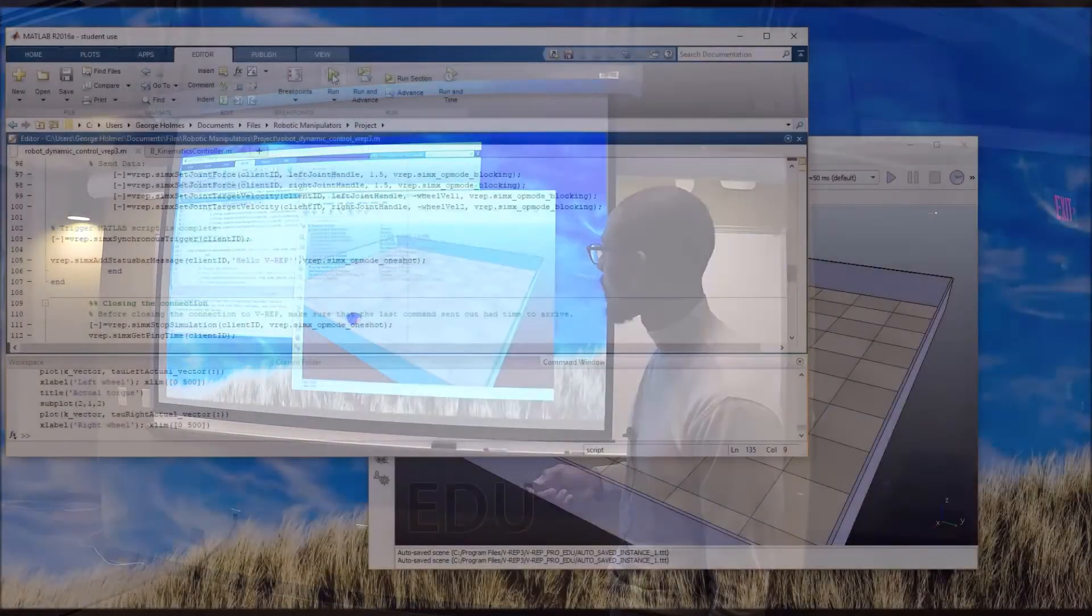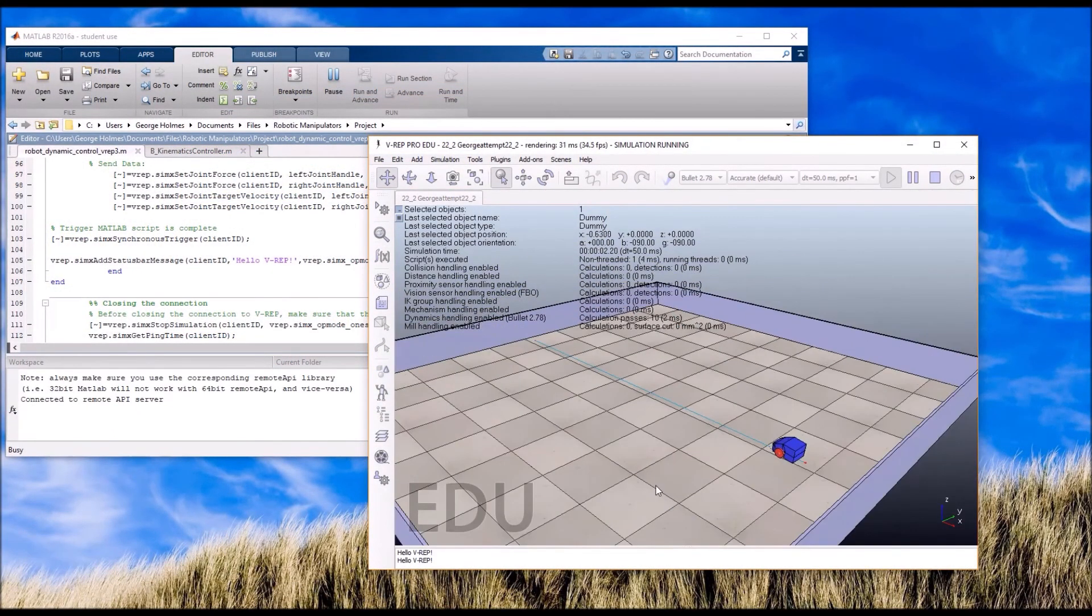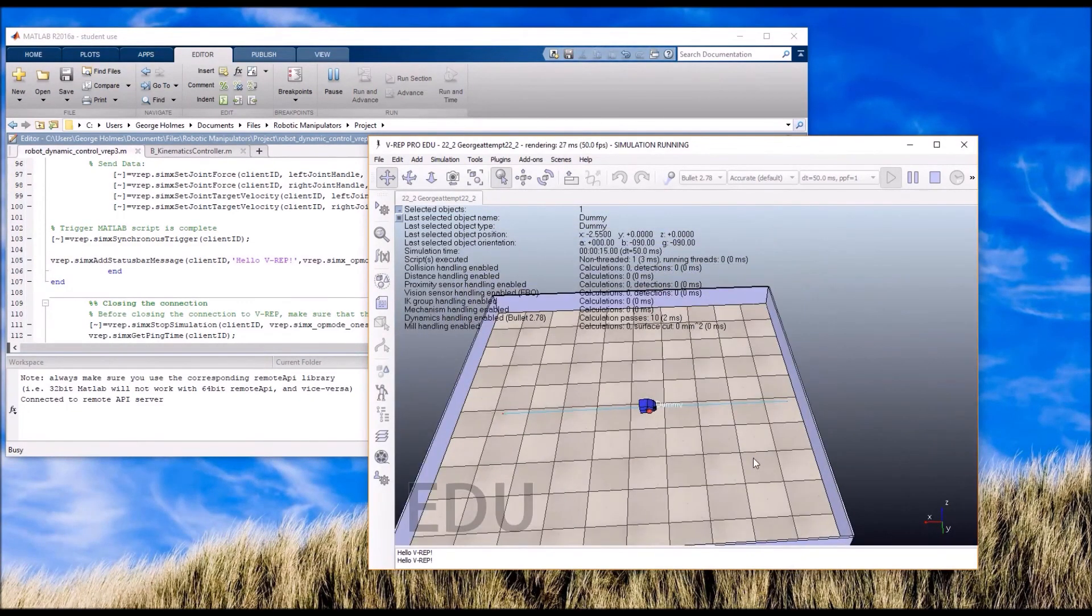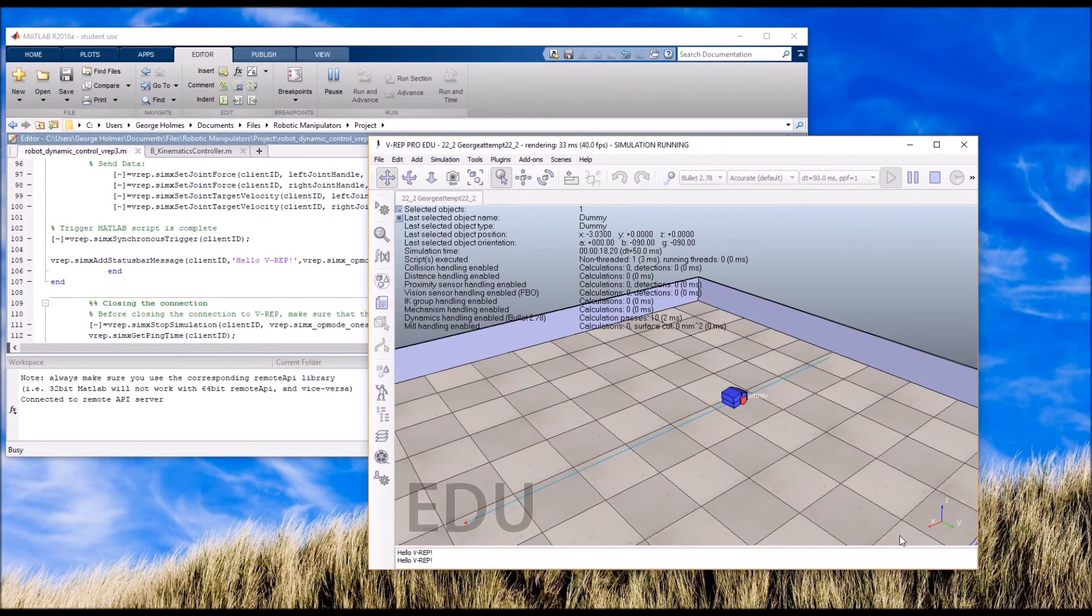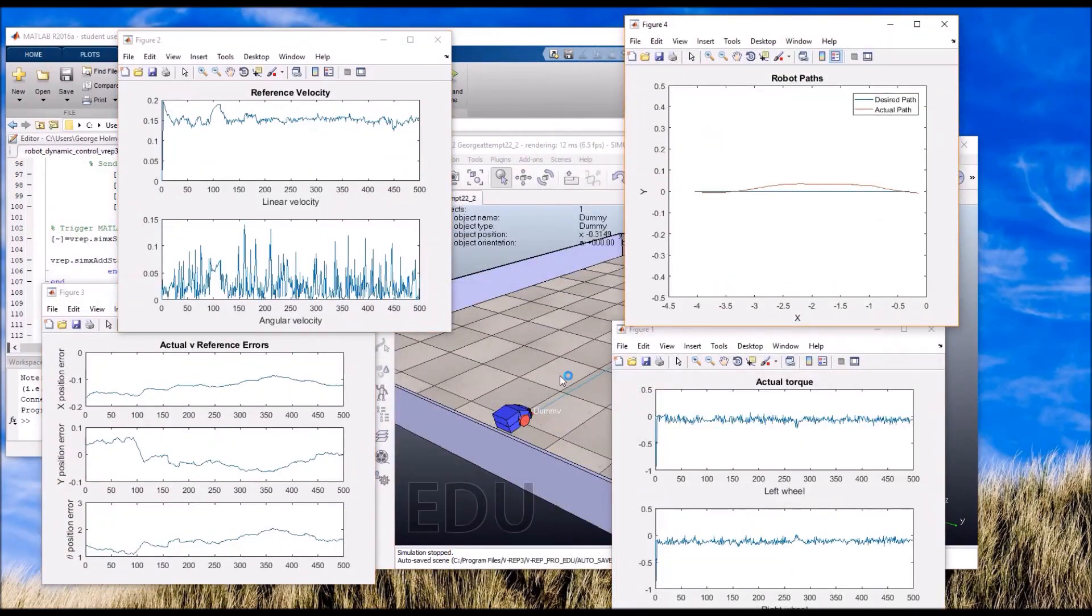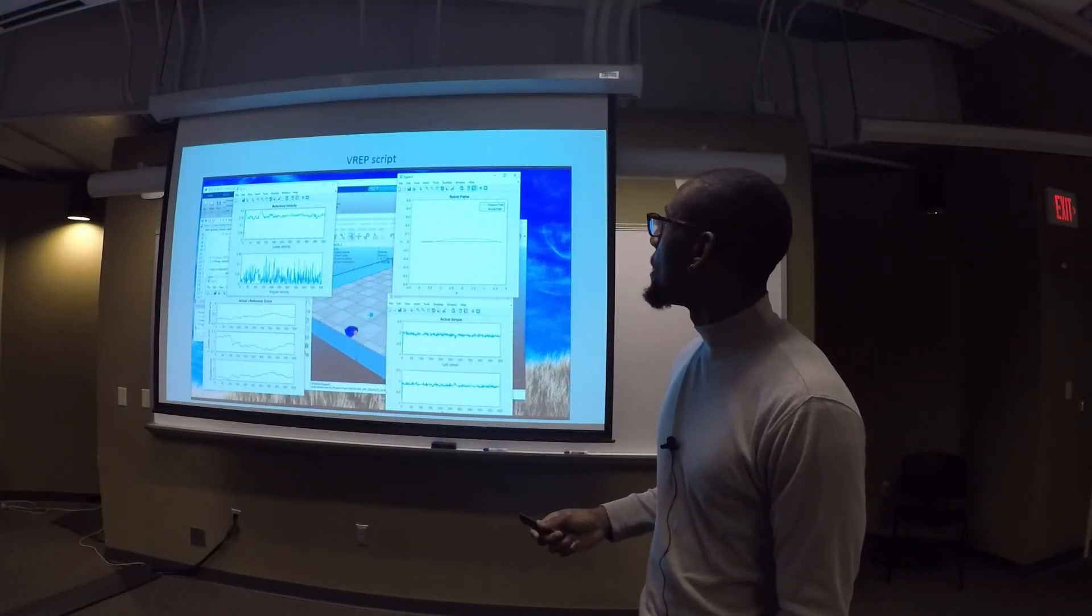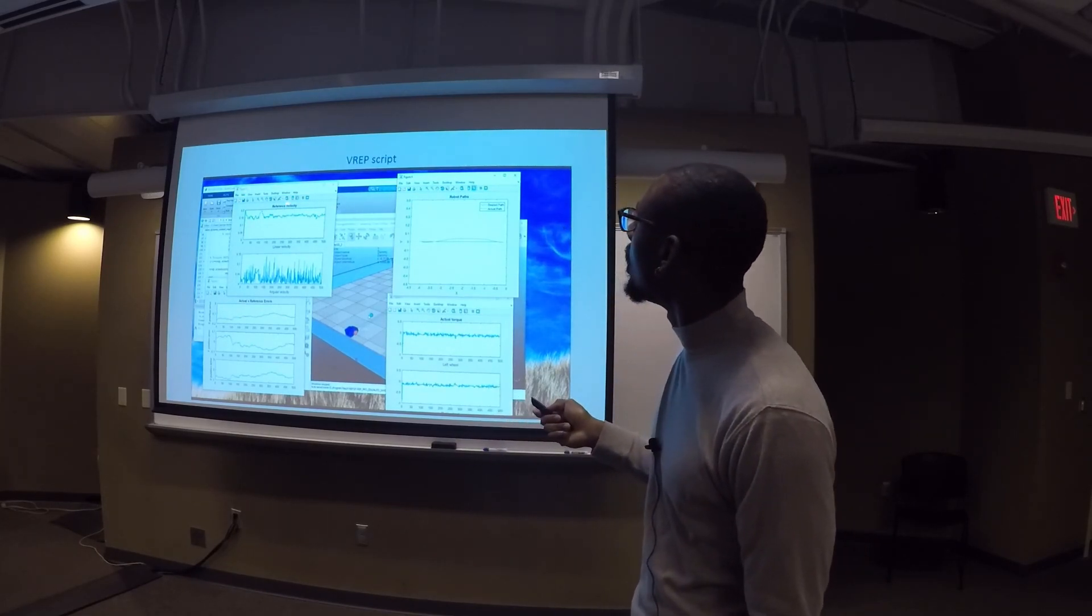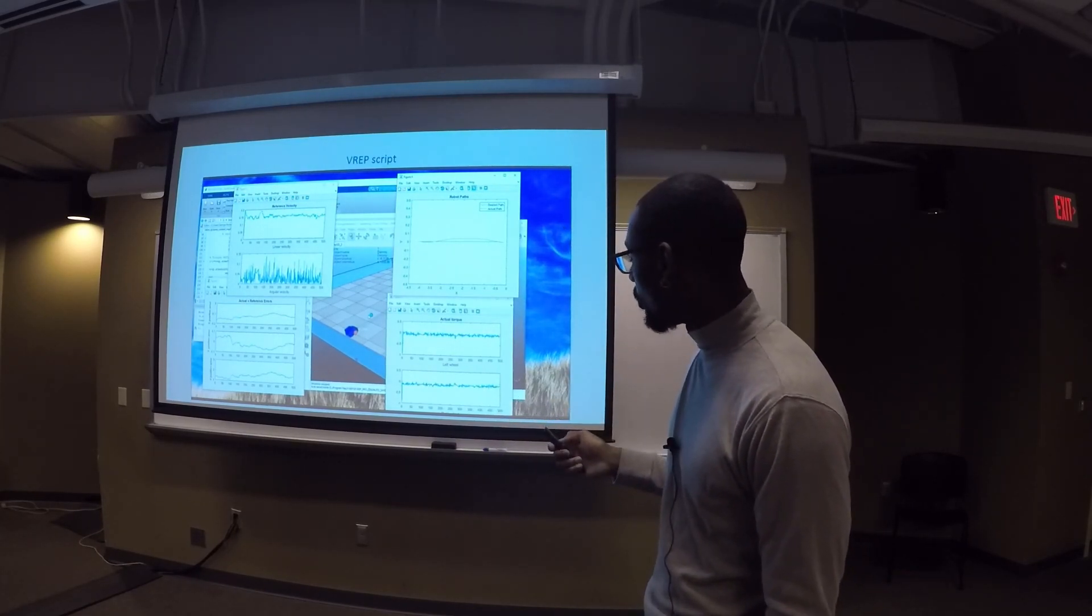So what's the results? You can see here in the simulation that we have a differential drive robot traversing a straight-line path. All of the code is running in MATLAB, connected to VREP via the API, and you can see that there are very small errors of the differential drive robot to the path. Here are some of the plots that are generated all from MATLAB, of course, showing the results.